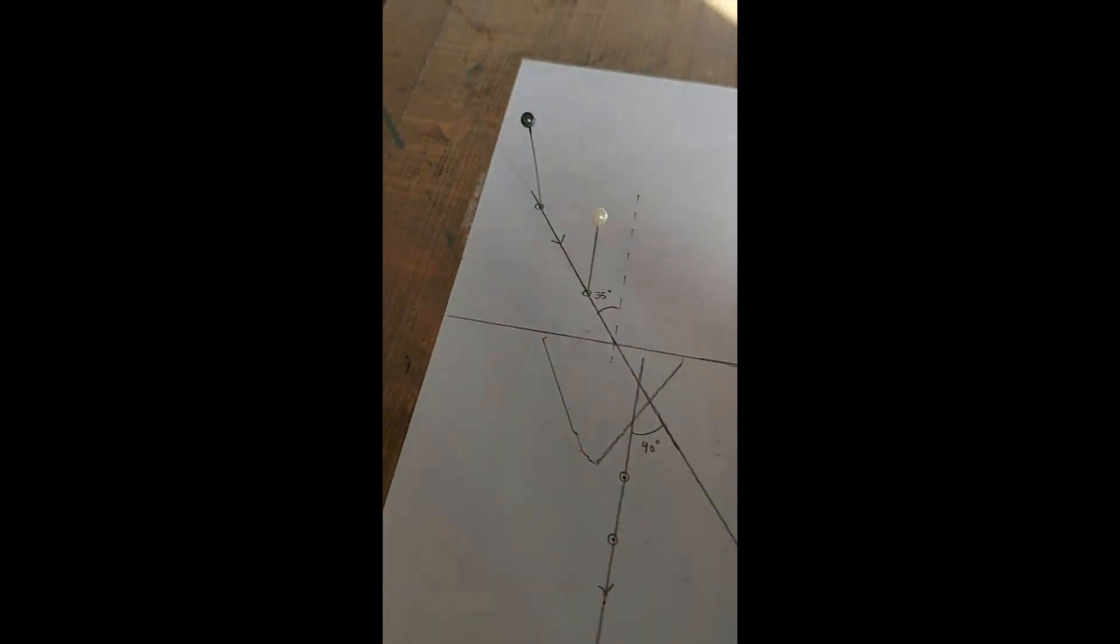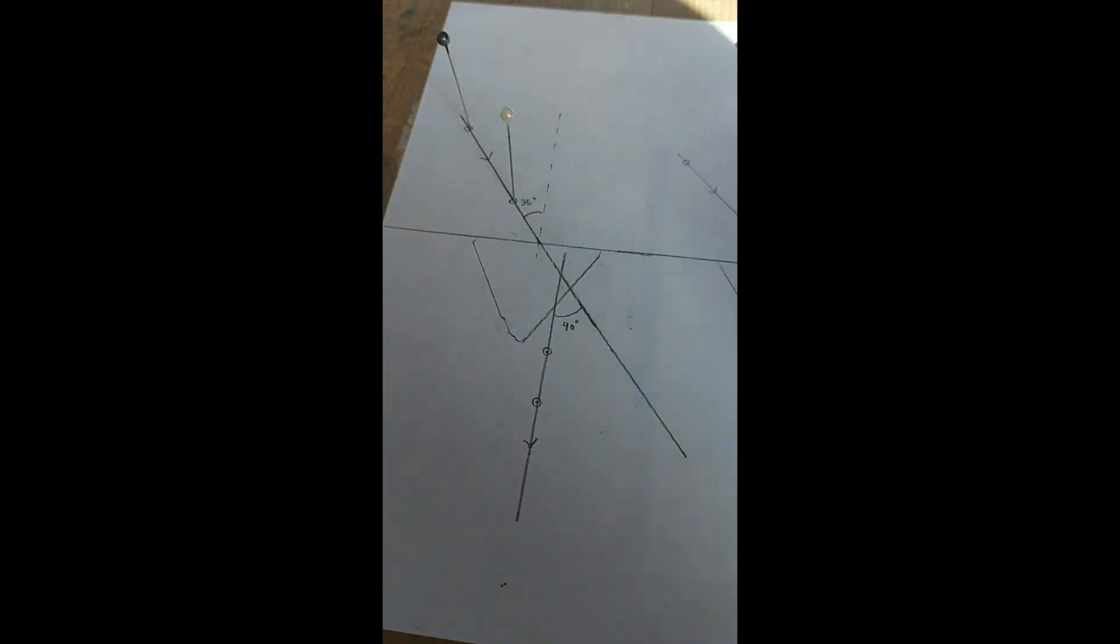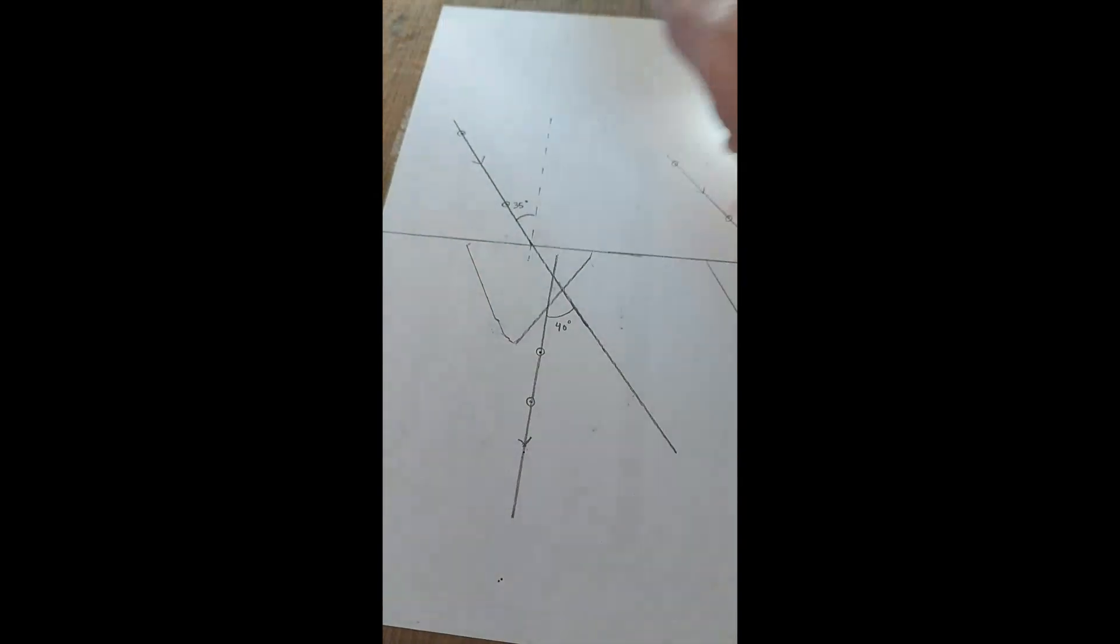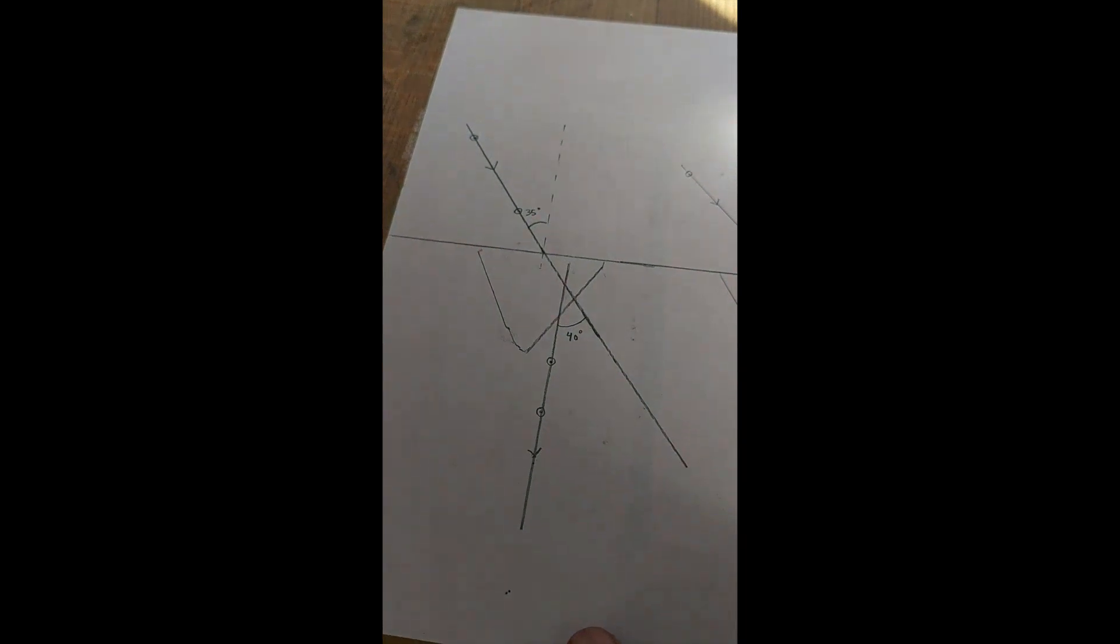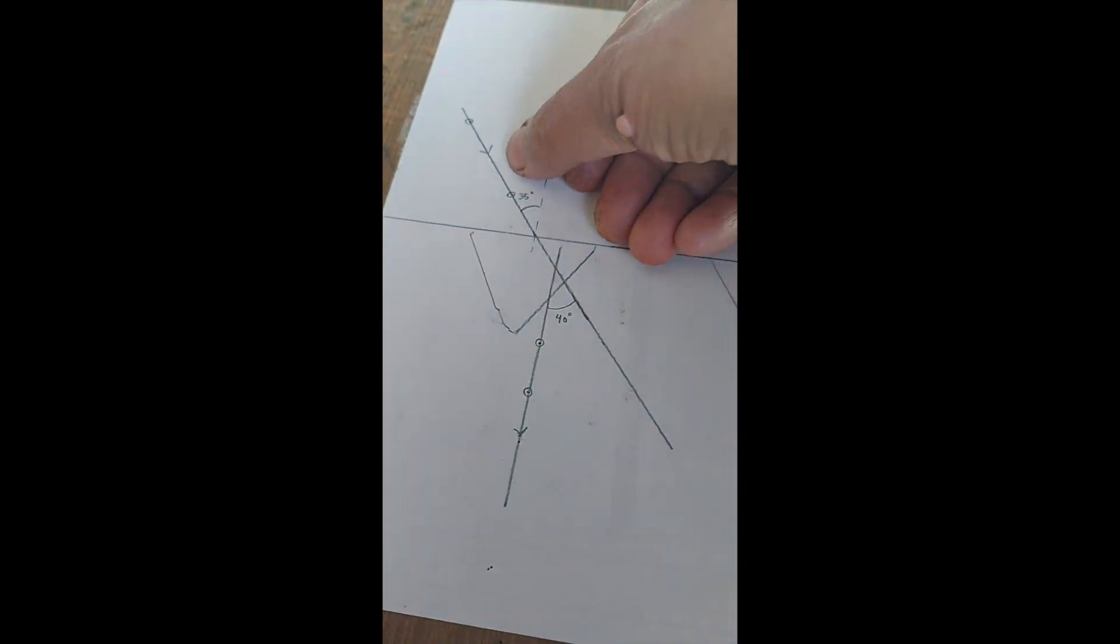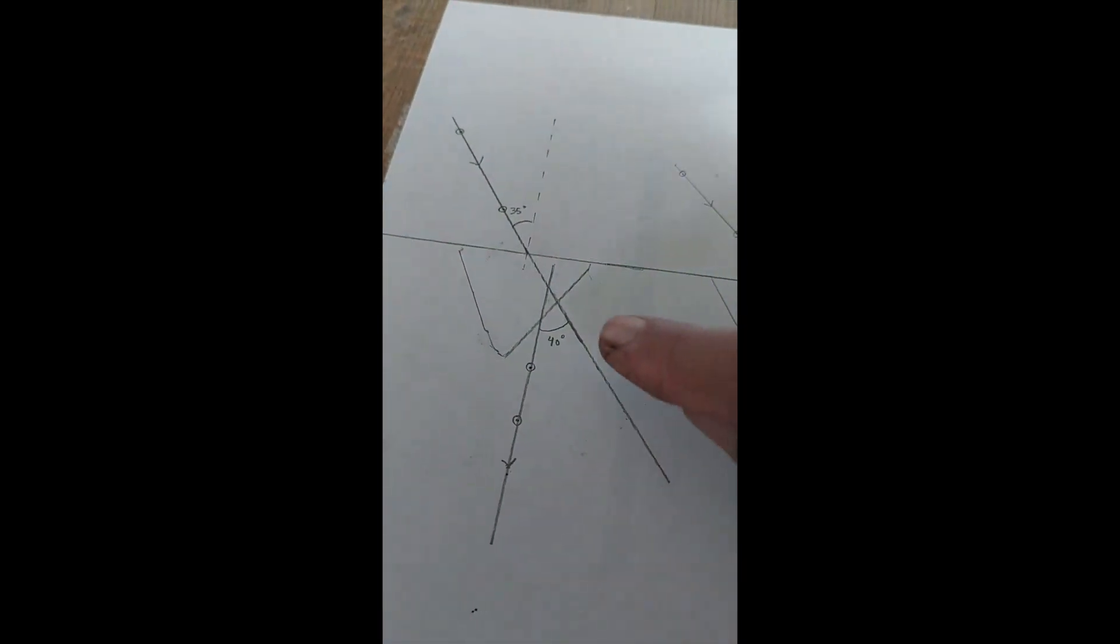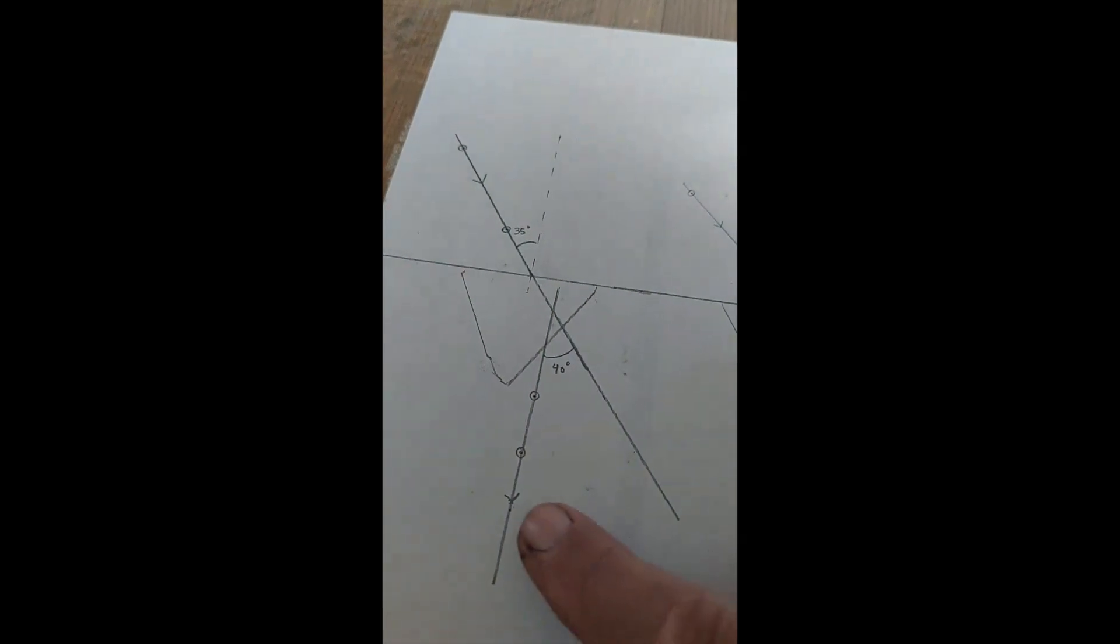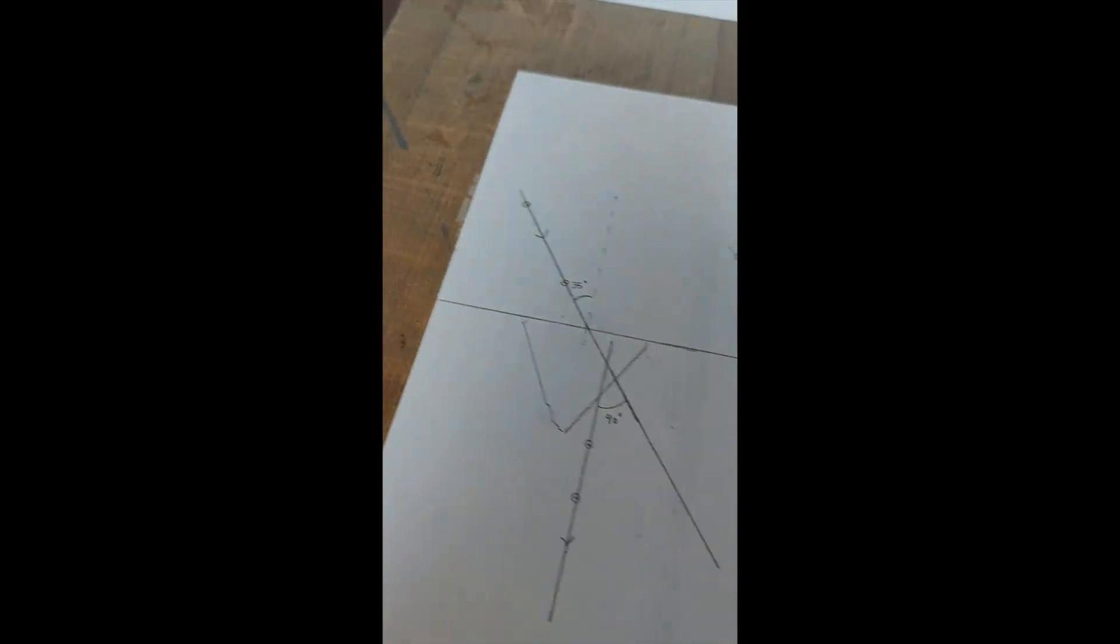After this we remove the prism and the pins, all the four, and circle the position of their feet. Then extend this incident ray and the refracted ray and measure the angle of deviation with the protractor.